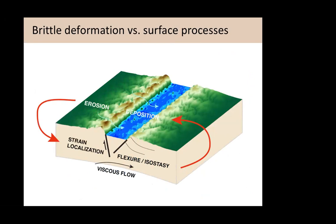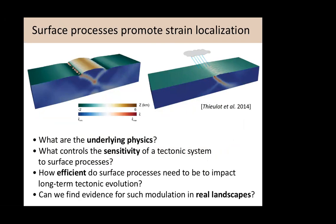I want to talk about brittle deformation and how it interacts with surface processes. When I talk about brittle deformation, I mean what's going on in the upper continental crust, where the temperature is pretty cold and you don't have significant viscous creep. Things happen mainly through either extremely localized deformation when you break faults, or in a more distributed fashion through broad-scale flexure or broad-scale isostatic readjustment. In particular, I want to talk about the feedbacks between surface processes and the dynamics of brittle strain localization. Something that keeps coming back in numerical models is that surface processes generally promote strain localization.